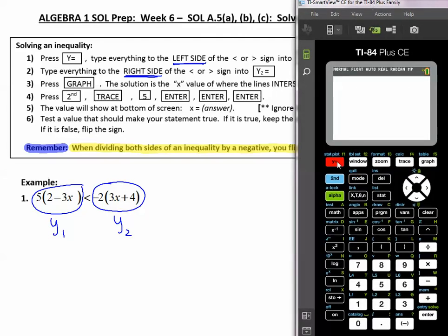I'm going to press y equals, like the directions say, and I type in everything from the left side into y sub 1, and everything from the right side into y sub 2. Then I press graph. The solution is the x value where the lines intersect, but I don't see where they intersect. So remember that sometimes we'll have to zoom out. Zoom out is zoom 3, and I press enter.